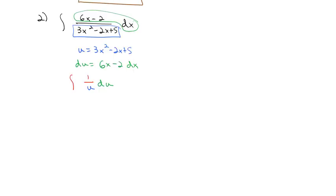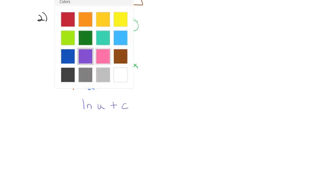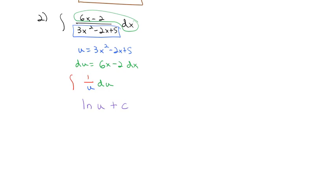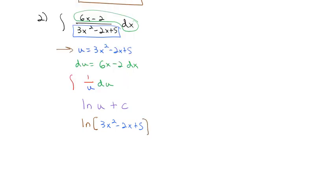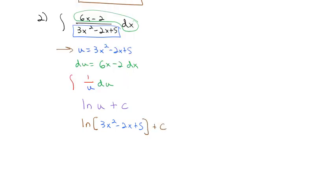Now I have an integral we can easily take. We know the antiderivative of 1 over u is the natural log of u plus c. So then we just convert back to x's: it's the natural log of 3x squared minus 2x plus 5 plus the constant.